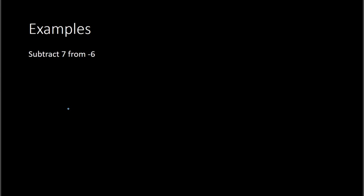Now let's look at examples given in English words where we need to set up the subtraction problem and solve. Here we have: subtract 7 from negative 6. So we have negative 6, and we're subtracting 7 from that, giving us negative 6 minus 7. I can think of this as an addition problem: negative 6 plus negative 7. Because the signs are the same — both negative — I add 6 and 7 to get 13, and keep the negative sign. My answer is negative 13.